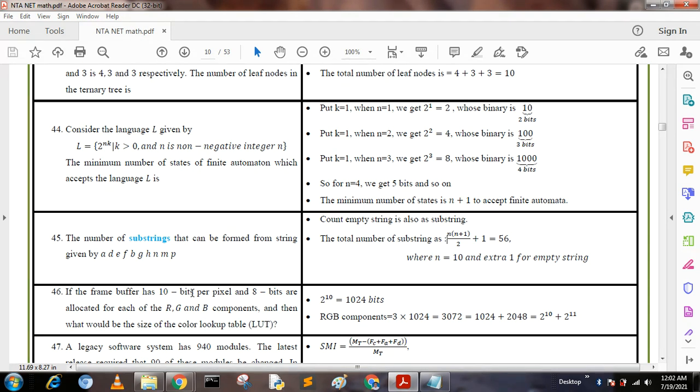Question 46: If the frame buffer has 10 bits per pixel and 8 bits are allocated for each of the R (red), G (green), and B (blue) components, then what would be the size of the color lookup table? 10 bits means 2^10 = 1024. RGB component means 3 bits × 1024 = 3072. We can write 3072 = 1024 + 2048 = 2^10 + 2^11. We write in this format because the options are given in this format.